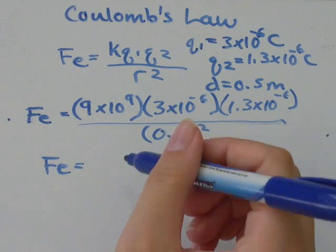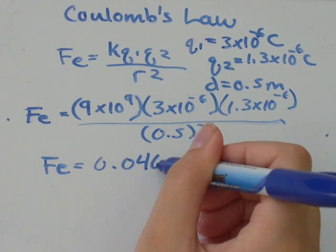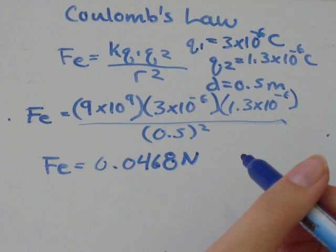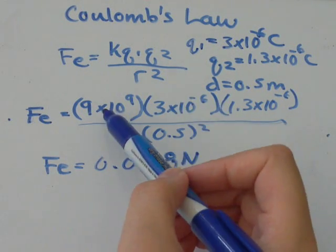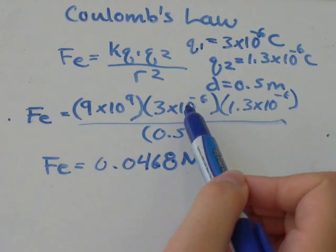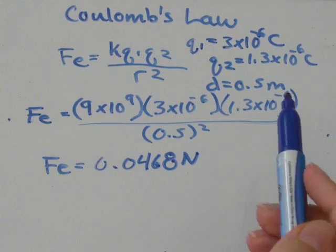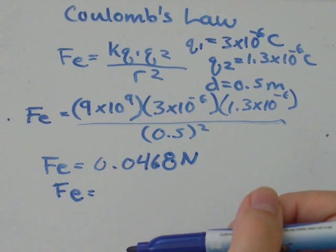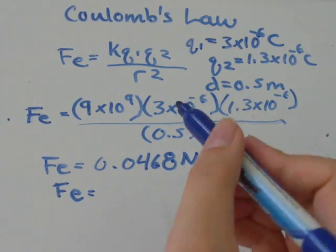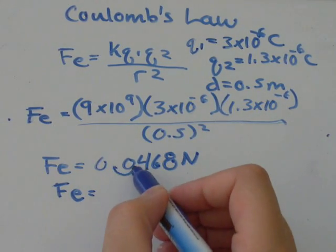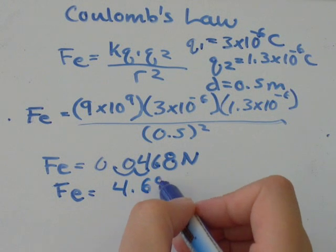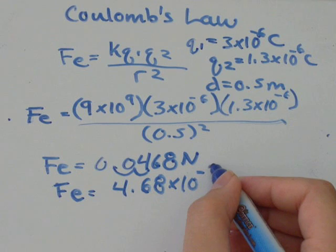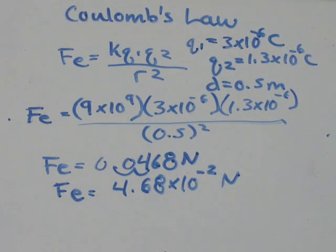And when I did that, I got 0.0468 newtons. And if you look at the question, all the numbers that are really small, they give to you in scientific notation, so it's a good idea to put your answer in scientific notation also. So this would just be 4.68 times 10 to the, remove the decimal twice, would be 10 to the negative 2, and the unit is newtons.